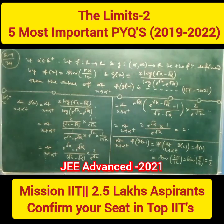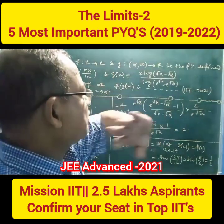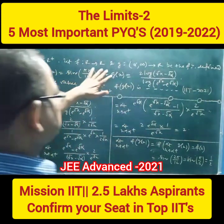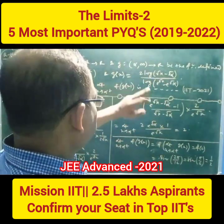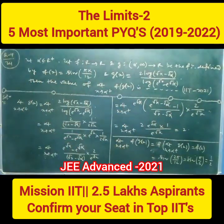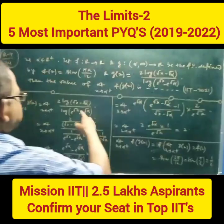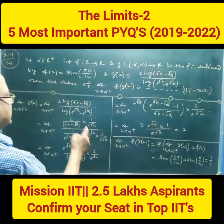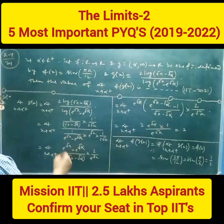Now, let alpha belong to R. Let f from R to R and g from (alpha, infinity) to R be functions defined by f(x) equal to sine(pi·x / 12) and g(x) equal to this. Then the value of limit x tends to alpha plus of f(g(x)) — this is IIT 2021 ka question. Apply L'Hôpital's rule: find the individual derivative of numerator and denominator. You will get this.